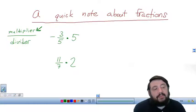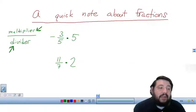I like to think of the top number of a fraction as the multiplier. It's a number that's going to multiply. I like to think of the bottom number of a fraction as a number that is going to divide. That is the divider number.